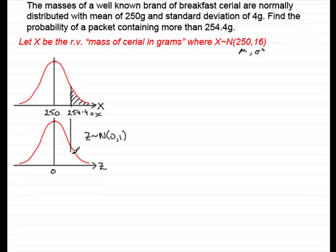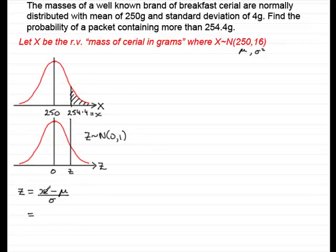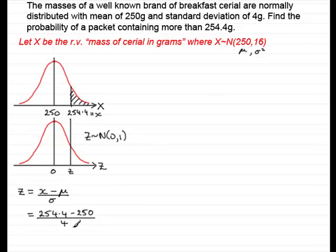I project the observed value down to the Z distribution and work out the corresponding z value. Z represents the number of standard deviations that the observed value is above or below the mean, and the formula is z = (x − μ) / σ. Applying that: z = (254.4 − 250) / 4, which gives us 1.1.